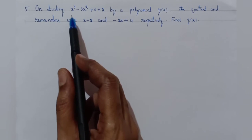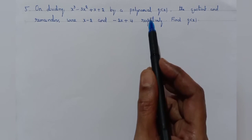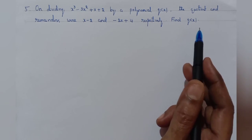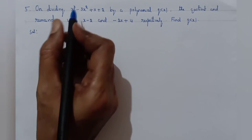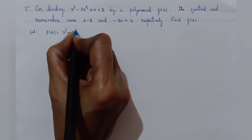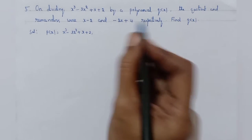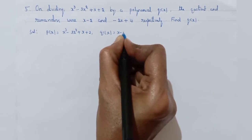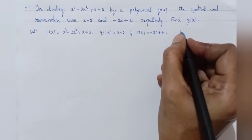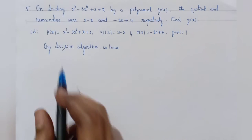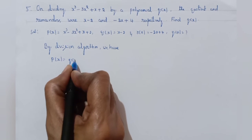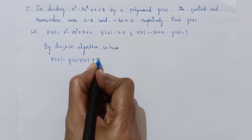Next question: On dividing x cube minus 3x square plus x plus 2 by a polynomial g of x, the quotient and remainder were x minus 2 and minus 2x plus 4 respectively. Find g of x. Let p of x equal to x cube minus 3x square plus x plus 2, quotient q of x equal to x minus 2, and remainder r of x equal to minus 2x plus 4. We have to find g of x. By the division algorithm, p of x equals g of x into q of x plus r of x.